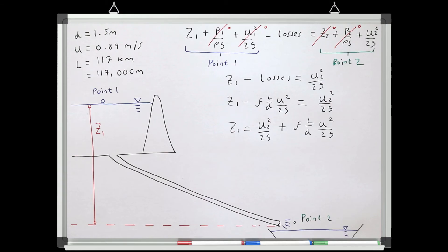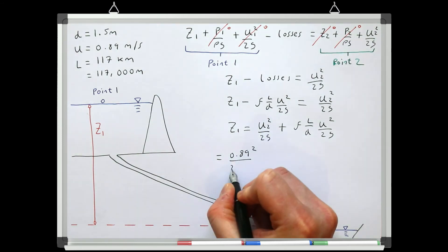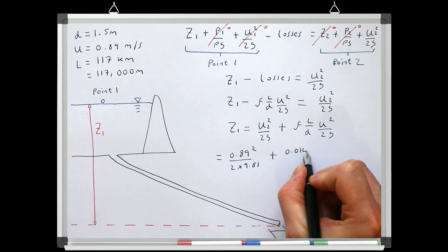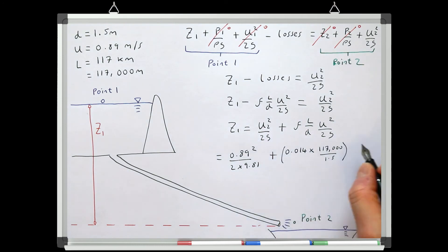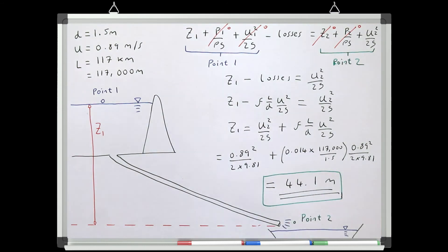We now have all the terms we need to solve the equation, so we can just plug the numbers into the equation. And this tells us that the water surface of the reservoir needs to be 44.1 meters above the pipe's outlet, to allow the system to flow with a mean velocity of 0.89 meters per second.